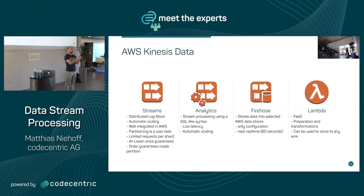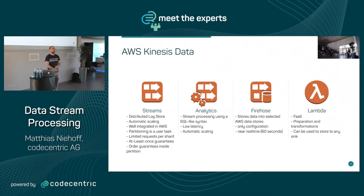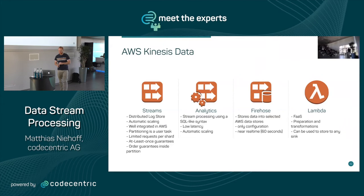One tricky thing about Kinesis Streams is its sharding model: every shard can be read at most five times per second. If you want all the data from a stream, you have to query all shards — meaning you can query your stream for data five times per second. With 10 consumers on one stream, each consumer can only query data every two seconds. If you have a low latency requirement, think about this carefully.